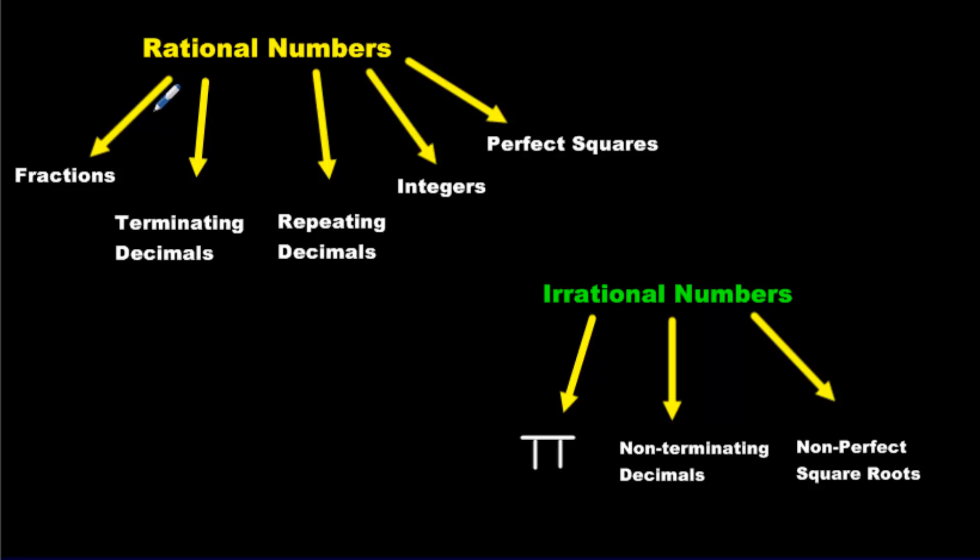More often than not, they're written as a fraction in the form of a fraction. So if we have two numbers stacked on top of each other, B cannot be 0. That's the only exception.